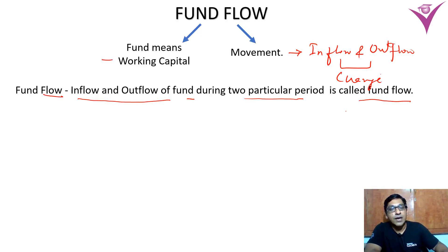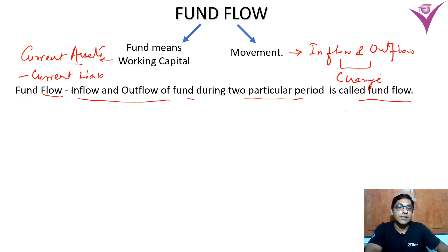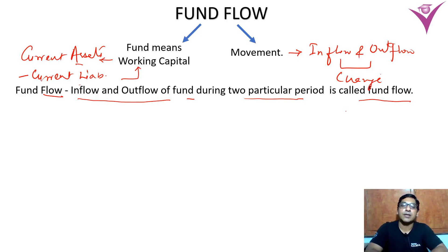Now what is working capital? Working capital simply means current assets minus current liabilities. When we subtract current liabilities from current assets, what we get is working capital.